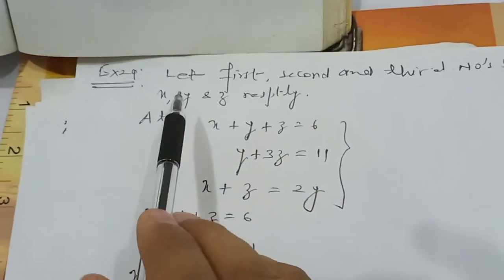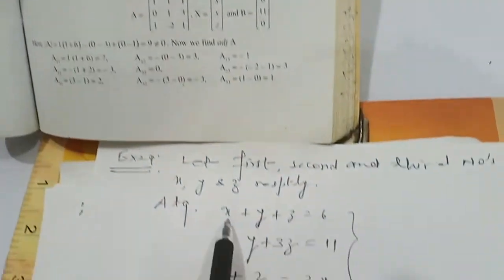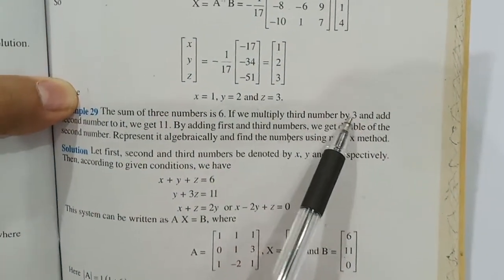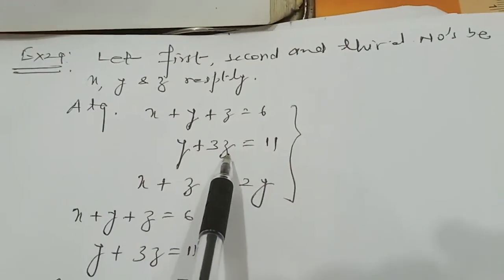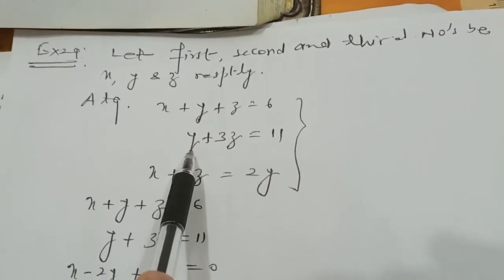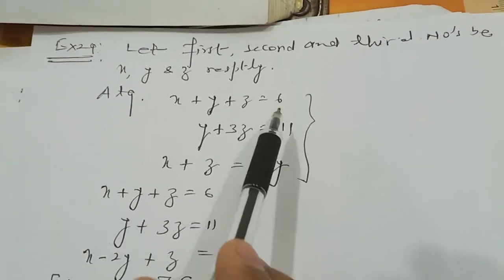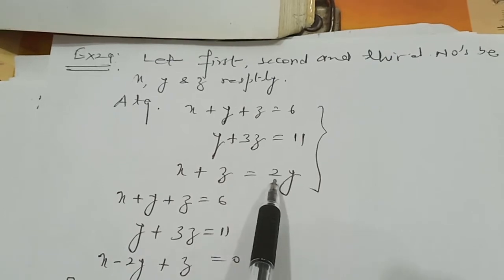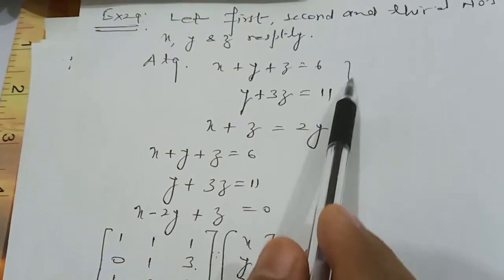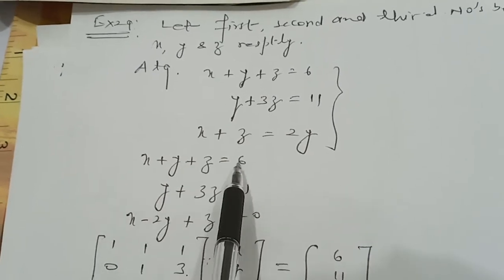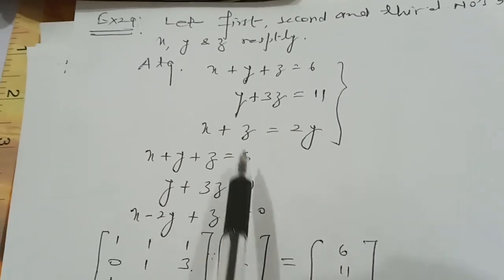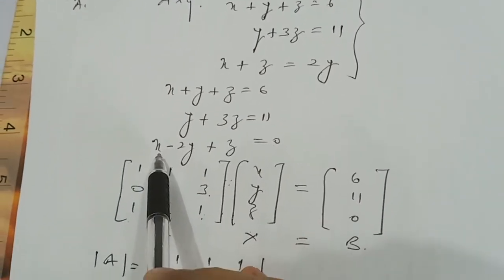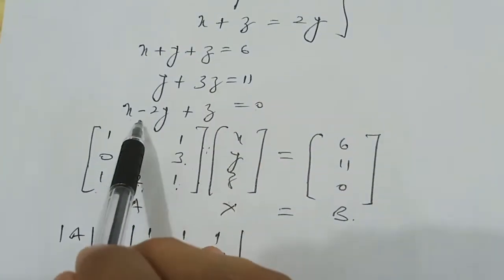According to the question: the sum of the three numbers is 6, so x + y + z = 6. If we multiply the third number by 3 and add the second number to it, the result is 11, so y + 3z = 11. By adding the first and third number we get double the second number, so x − 2y + z = 0. This gives us a system of three linear equations in three variables.